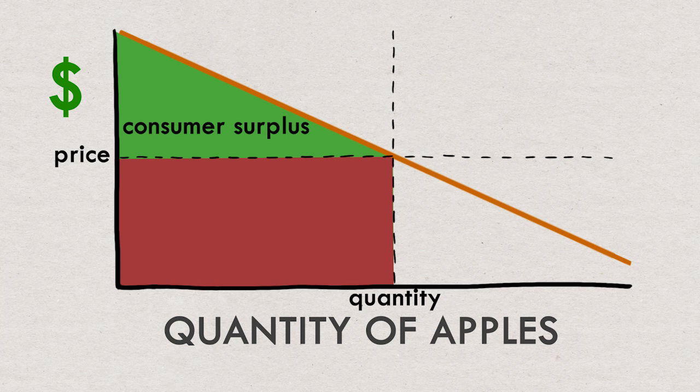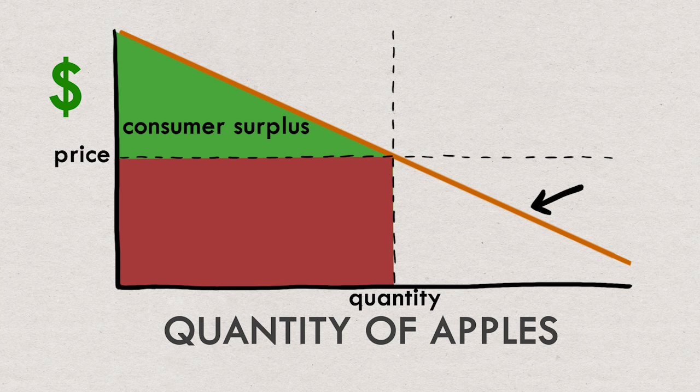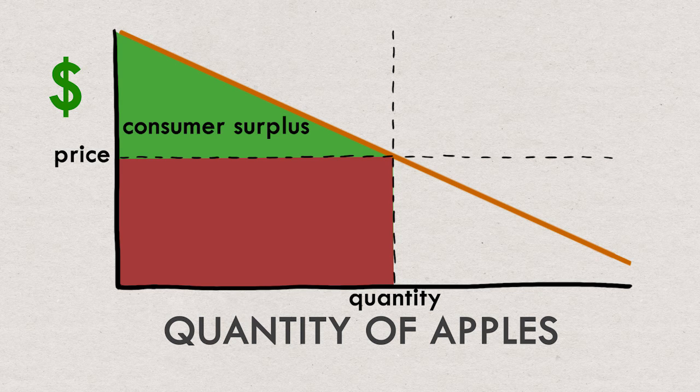We didn't really get into how we find this line. The demand curve. But this is very important. We'll look at how to find that information in another video. For now we're just assuming that we magically know the maximum willingness to pay or the tipping points that everyone has for these apples.